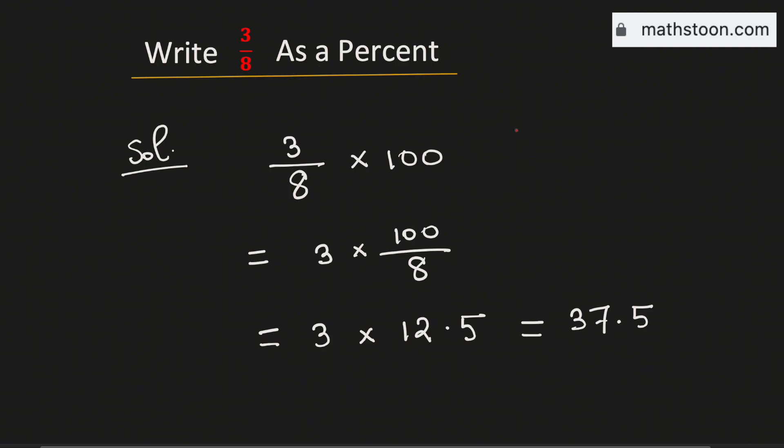Therefore 3 by 8 as a percent is same as 37.5 percentage. And this is our final answer.